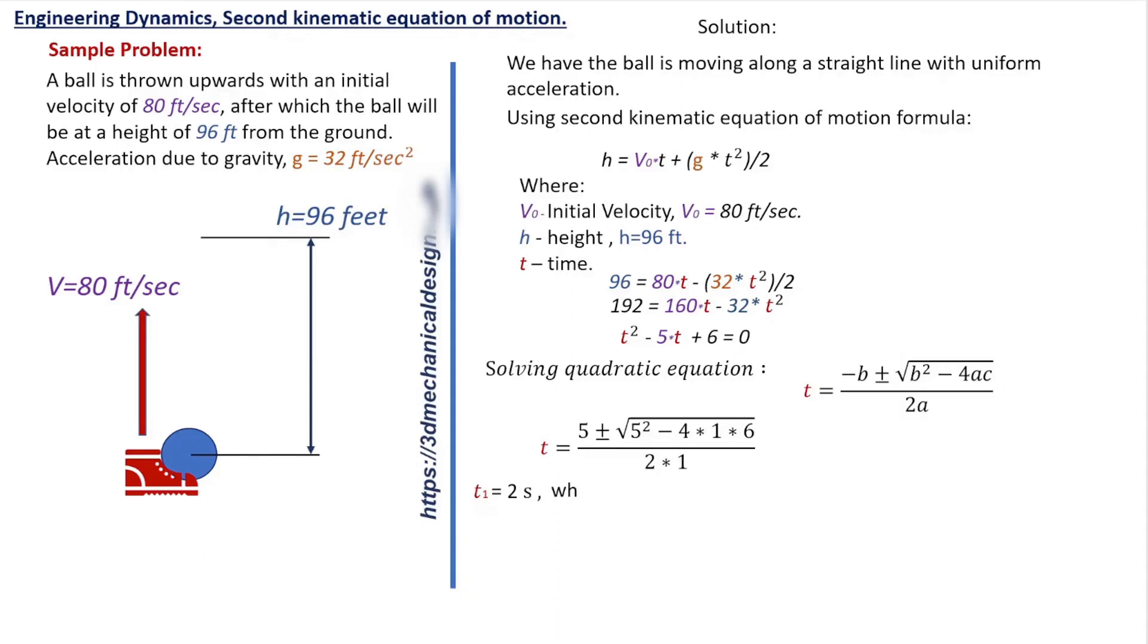T equals 2 seconds. When the ball moves up, after 2 seconds it is at a height of 96 feet. T equals 3 seconds. When the ball returns in 3 seconds, its height is 96 feet.